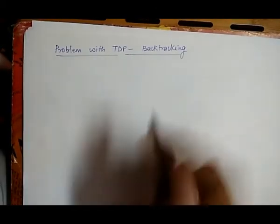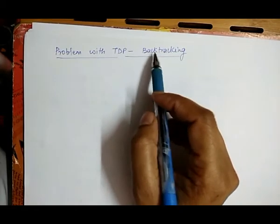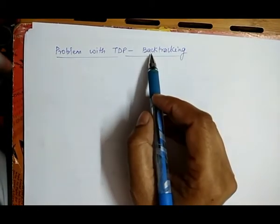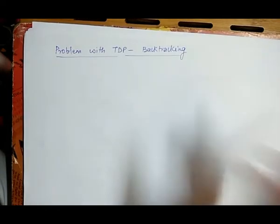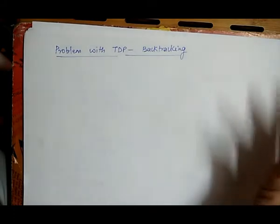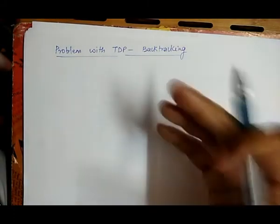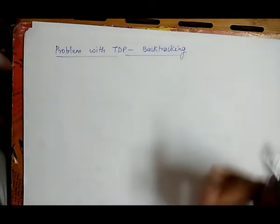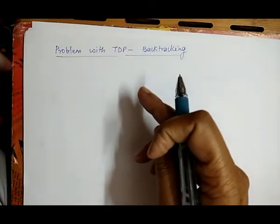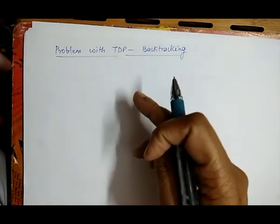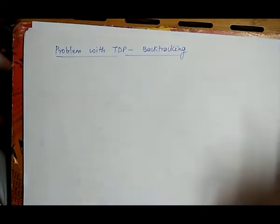Friends, now we discuss the next problem with top-down parsing, which is backtracking. As the name suggests, if we want to parse a particular string from a particular grammar and if we choose the mismatched alternative for generating the particular string, then we have to backtrack to the starting symbol and take a different alternative to generate the particular string.